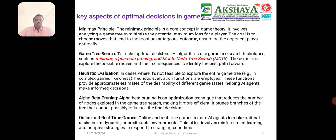For heuristic functions, in cases where it is not feasible to explore the entire game tree — for example, in complex games like chess — heuristic evaluation functions are employed. These functions provide an approximate estimate of the desirability of different game states, helping the AI agent to make move decisions. Alpha-Beta Pruning is an optimized technique that reduces the number of nodes explored in the game search tree, making it more efficient by pruning branches that cannot influence the final decision.